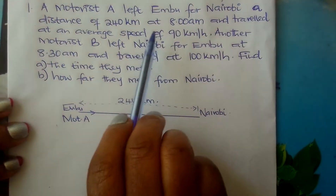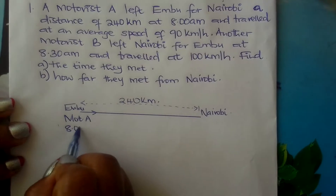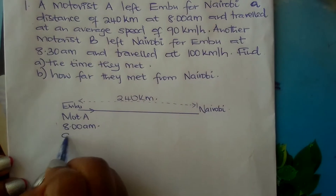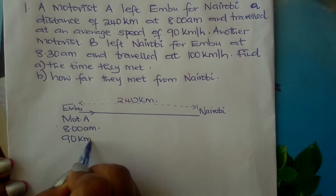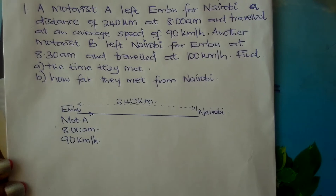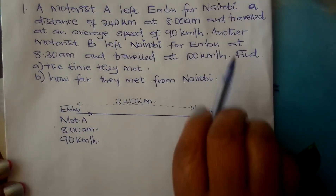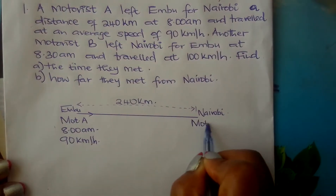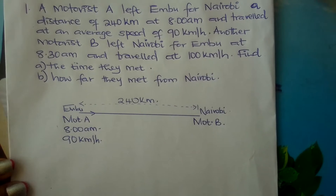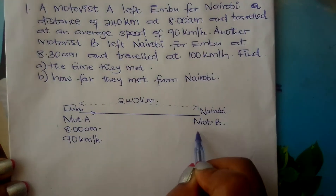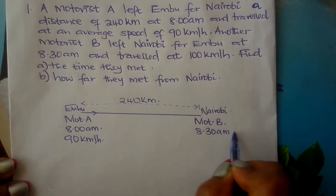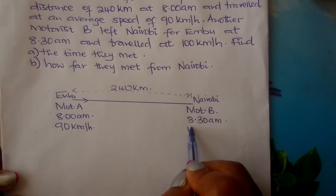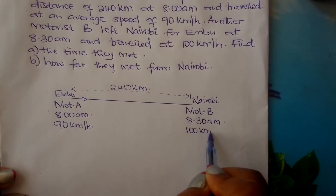We are told motorist A left Embu at 8 am — write 8 am here, and his speed is 90 km per hour. Another motorist B left Nairobi — write motorist B here. He left Nairobi at 8:30 am and travelled at a speed of 100 km per hour.